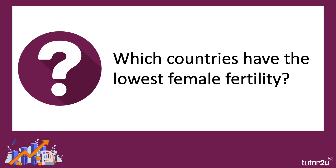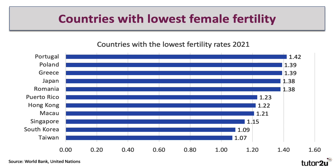Part of the issue of global ageing is the low level of female fertility. Which countries have the lowest female fertility? The answer in 2021 was Taiwan at 1.07, South Korea at 1.09, and Singapore at 1.15. Remember that the replacement fertility level is 2.1. All of these countries — including Greece, Japan, Hong Kong, and Portugal — have female fertility rates well below the replacement fertility level required for the natural population to replace itself.